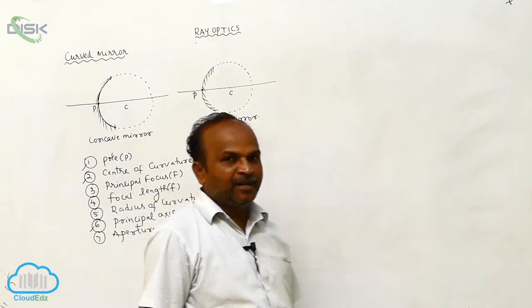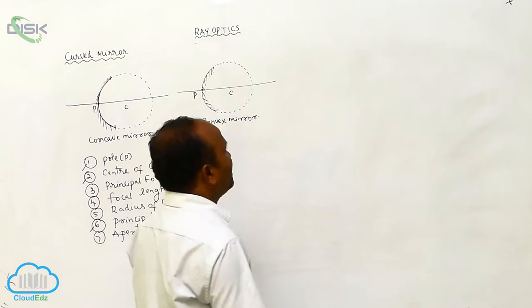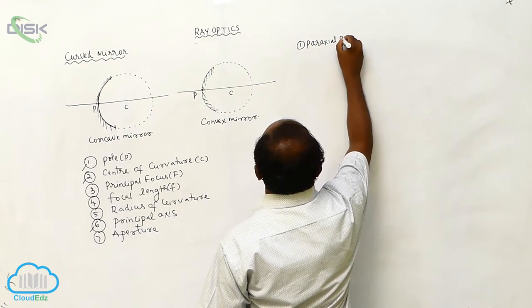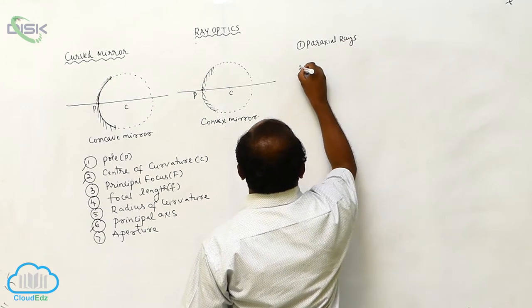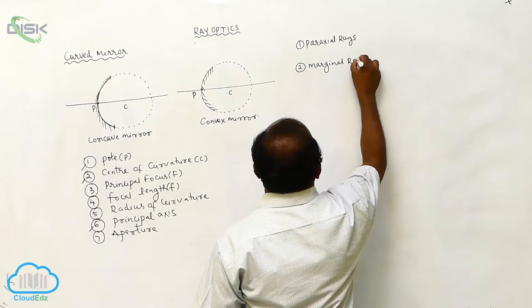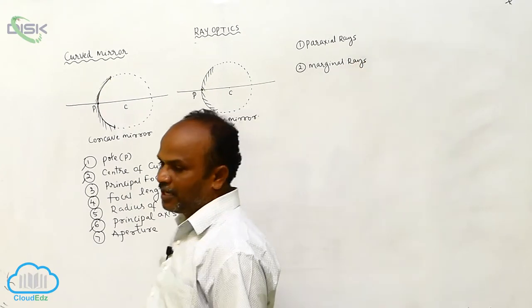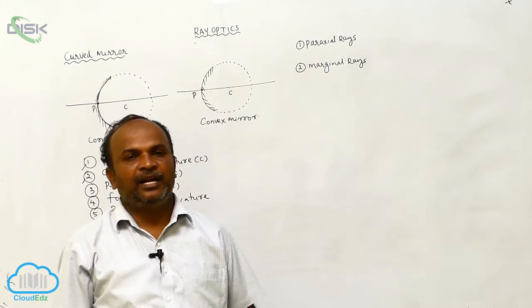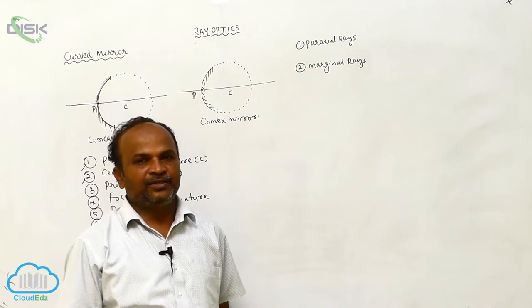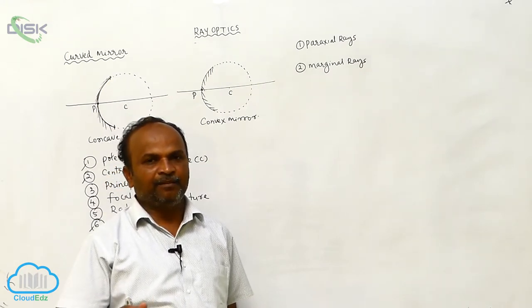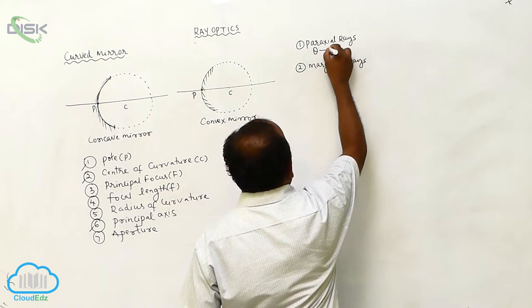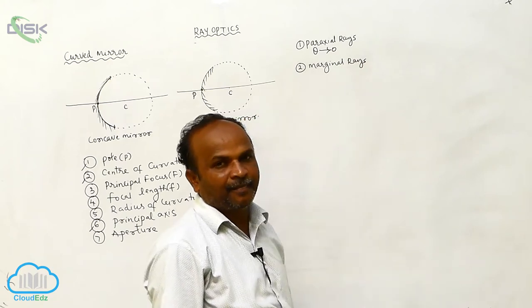Before defining principal focus, note that light rays are of two types: paraxial rays and marginal rays. The light rays which make small angles with the principal axis are called paraxial light rays. While considering paraxial light rays, the angles involved are very small — theta tends to 0 in radians.